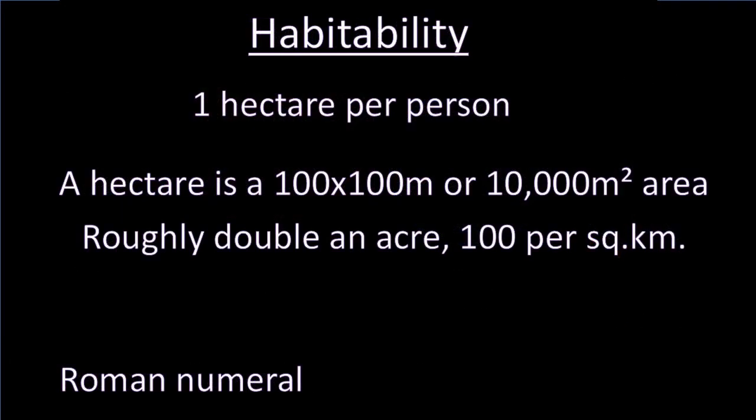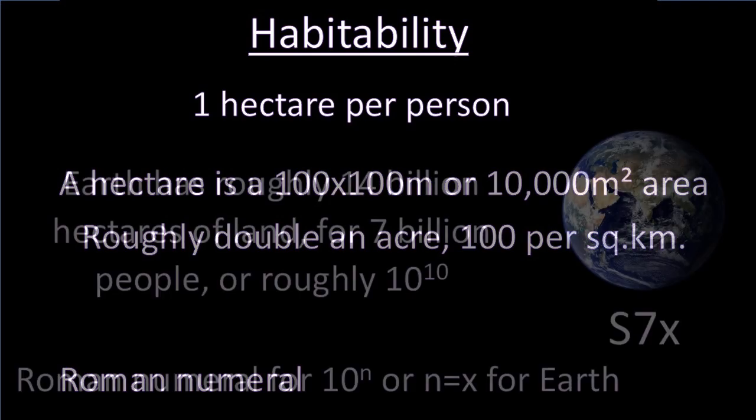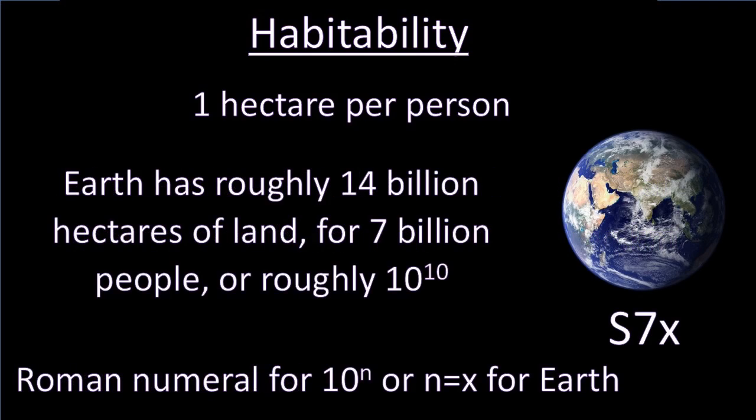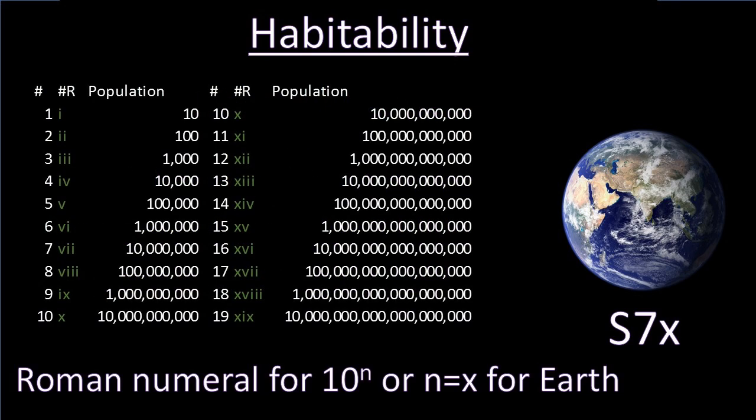Our last category is habitability. Now for all purposes we're just going to say that one hectare, which is a 100 meter by 100 meter area, about the size of an acre, is about how much space you'd need for one person to grow all their food and have some forest and garden area. It's a very approximate figure but Earth has about 14 billion hectares of land including unusable stuff like deserts and polar regions and about 7 billion people or roughly 10 to the 10th power. This conveniently gives us the Roman numeral X for 10 and we're using that same 10 to the nth system so X would be what it would be for Earth and other planets and S7X would be your typical planet that was fully populated.